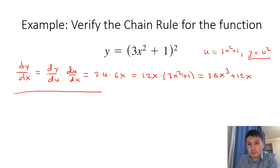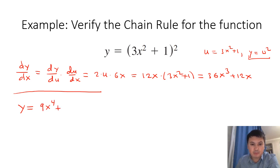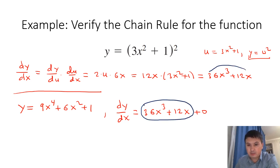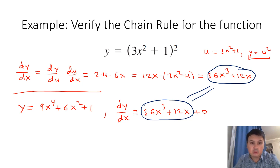Now let's evaluate it using direct derivative rules. We simply expand (3x² + 1)²: it becomes 9x⁴ + 6x² + 1 by binomial expansion. Taking the derivative with respect to x: the derivative of 9x⁴ is 36x³, and the derivative of 6x² is 12x, plus 0. As we can see, the derivatives obtained by the chain rule and by the direct method are equal, which verifies the chain rule for this example.